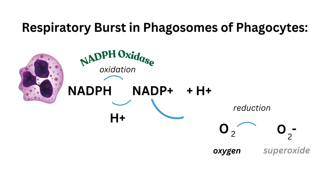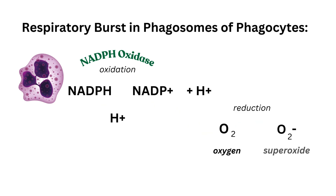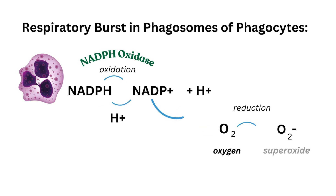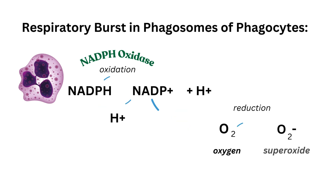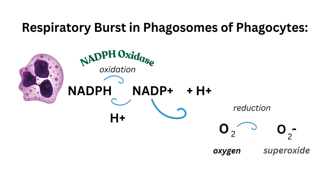Now NADP+ adds an electron to oxygen. This chemical reaction is called reduction, forming a very reactive oxygen species called superoxide, which is an oxygen with an added electron. We sometimes use the term free radicals to describe an atom or molecule with unpaired electrons that make them highly chemically reactive, causing oxidative damage to cellular membranes, proteins, DNA, and RNA molecules.